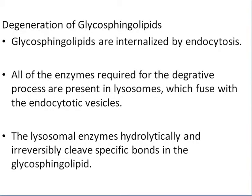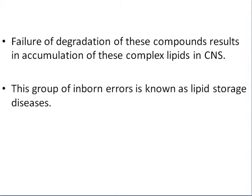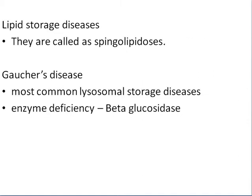Degradation of glycosphingolipids begins when they are internalized by endocytosis. The enzymes required for these degradative processes are present in the lysosomes, which fuse with the endocytotic vesicles. Lysosomal enzymes hydrolytically and irreversibly cleave the specific bonds in the glycosphingolipids. Failure of degradation results in accumulation of these complexes in the central nervous system, causing inborn disorders known as lipid storage diseases, also called sphingolipidoses.